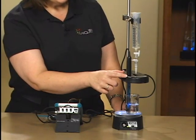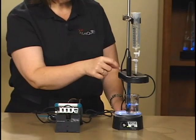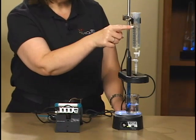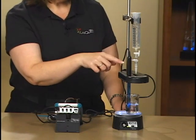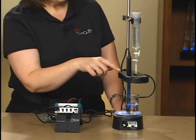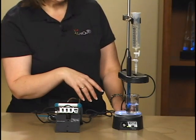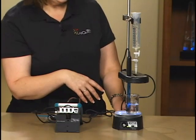The drop counter is this part here. It actually counts the drops that fall through from this reagent reservoir into the beaker and it counts them by breaking a little infrared beam and counting the number of drops. The software then converts that into a volume in milliliters.